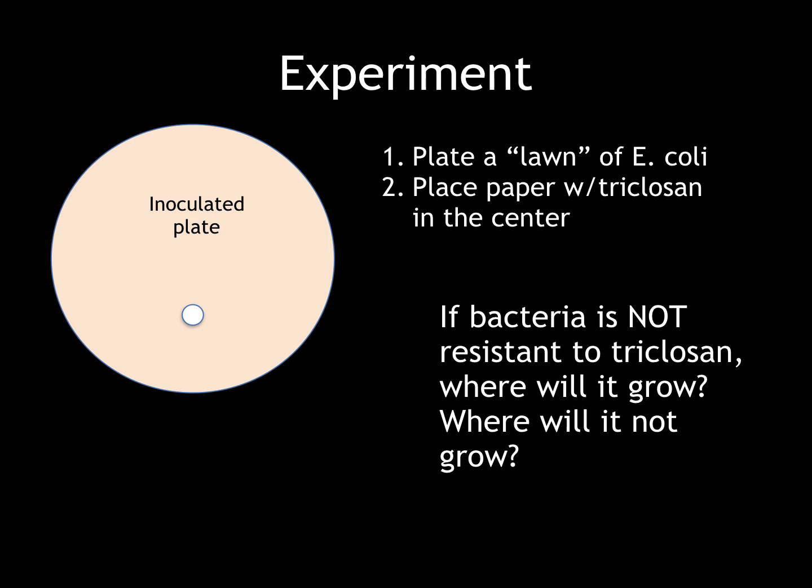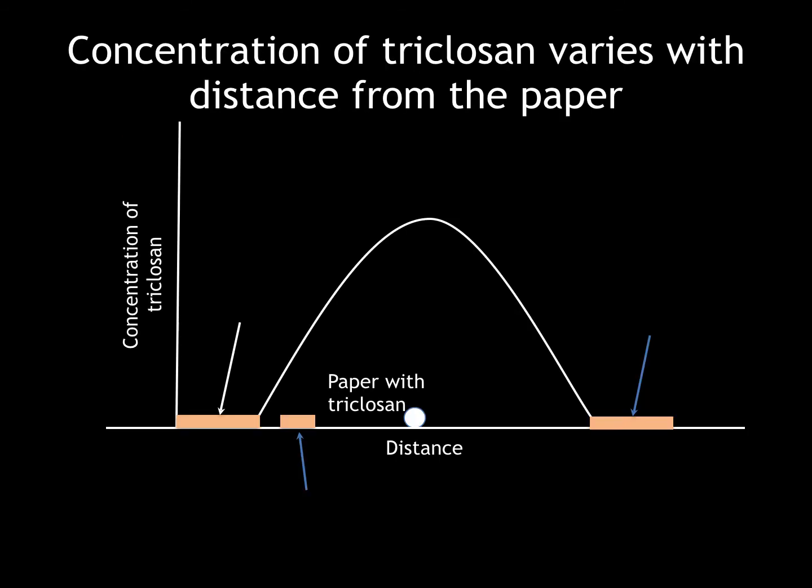Remember, Triclosan is our antibacterial agent. Take a moment to think about the following questions: if bacteria is not resistant to Triclosan, where will it grow? Where will it not grow? It's important to note that the concentration of Triclosan varies with distance from the paper — it is most dense right on or near the paper and becomes less dense farther outward. Consider these three bacterial colonies: which are resistant and which are probably not resistant to the antibacterial agent? The colony closest to the dot is probably resistant, and those farther away are probably not resistant.